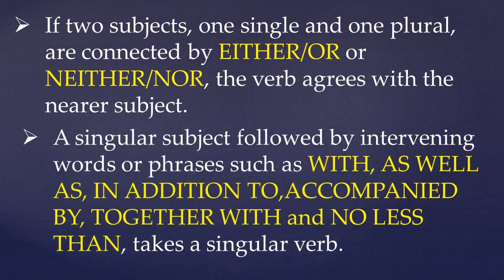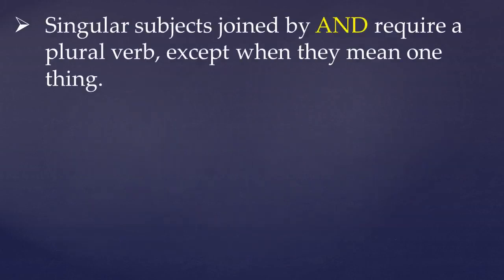The next rule: a singular subject followed by intervening words or phrases such as 'with', 'as well as', 'in addition to', 'accompanied by', 'together with', and 'no less than' takes a singular verb. Next rule: singular subjects when joined by 'and' usually require a plural verb. But if they mean one thing — like 'bread and butter is a good breakfast' — we will use the singular form of the verb.